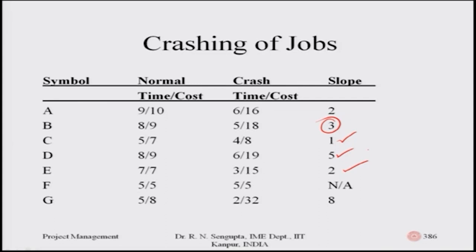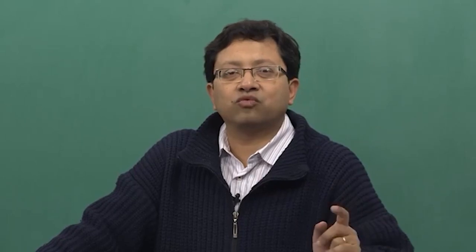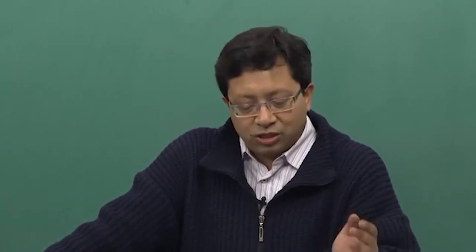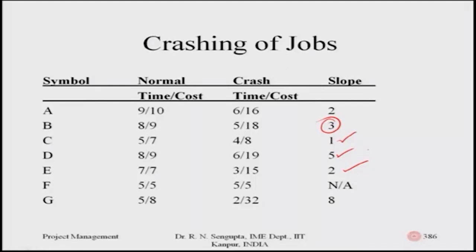For activity F, note carefully: you cannot reduce the number of days. Consider, for example, that you want a CNC machine supplied by a vendor at a fixed cost of five units. The vendor cannot extend or shorten the usage because his other clients are also in line. So you, as one of the clients, cannot have that request entertained — hence there is no concept of slope for F. For activity G, thirty-two minus eight divided by five minus two gives a slope of eight.